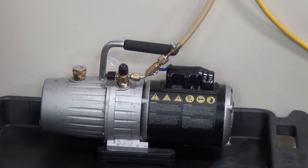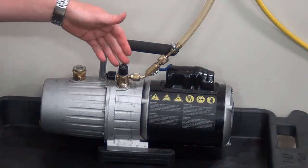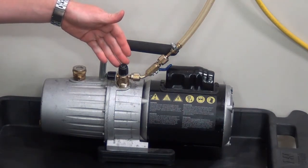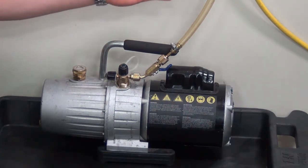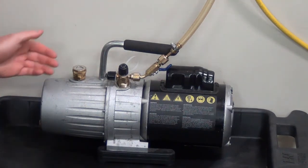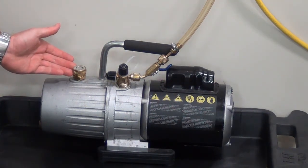Oil suck back can occur anytime there is a pressure difference between the vacuum pump intake, which is normally at the same pressure or vacuum level as the system being evacuated, and the vacuum pump exhaust, which is normally at atmospheric pressure.